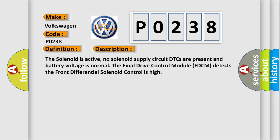The solenoid is active, no solenoid supply circuit DTCs are present and battery voltage is normal. The final drive control module FDCM detects the front differential solenoid control is high.